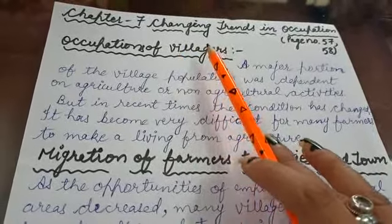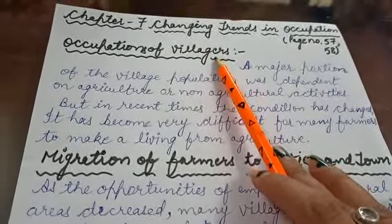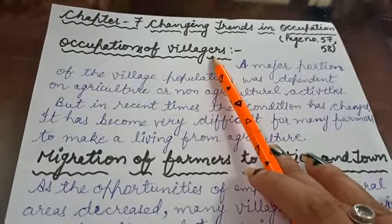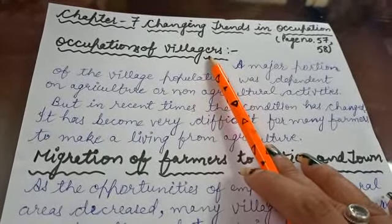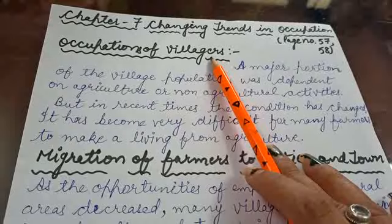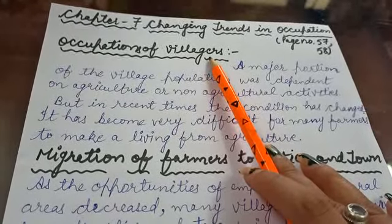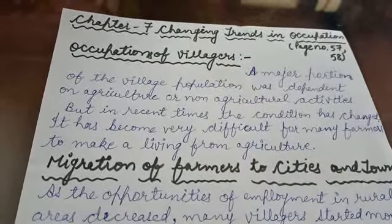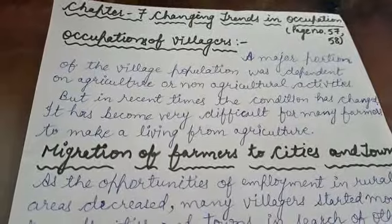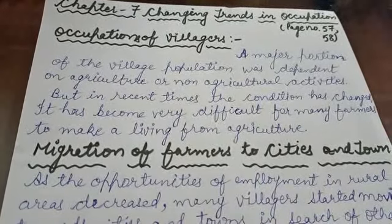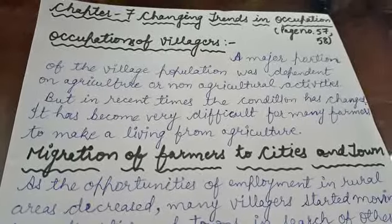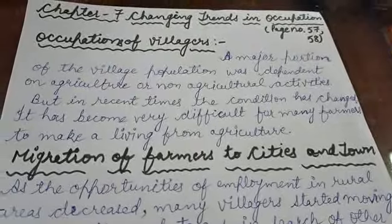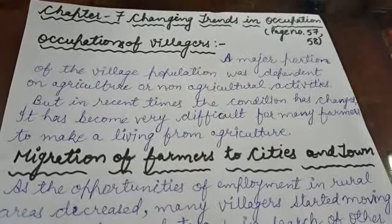Occupation of villagers: In Behrampur village in the state of Odisha, most people are involved in cultivation of crops or animal husbandry. Many villagers are also involved in non-agricultural occupations such as blacksmith, carpenter, porter, weaver, etc. Some people make beautiful handicrafts like puppets, baskets, mats, stone carvings, masks and patachitra. Patachitra means paintings on cloth. They sell them to tourists to make a living.